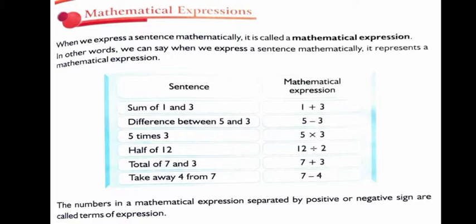Take away 4 from 7. Take away, we are going to subtract. So larger number minus smaller number. So 7 minus 4.